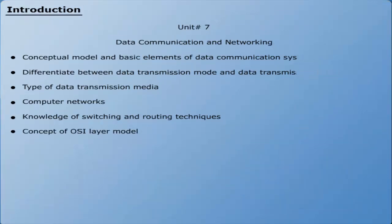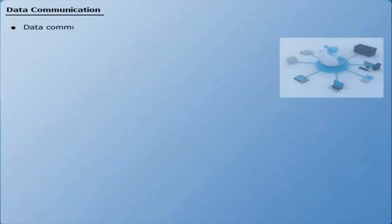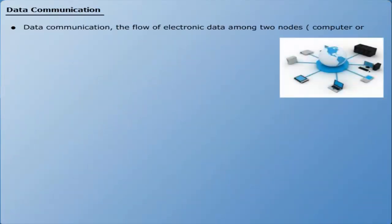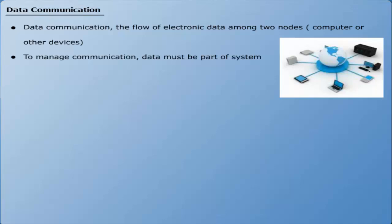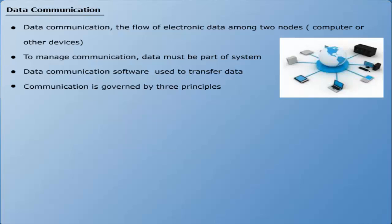Data communication is the flow of electronic data among two nodes, computers and other devices, through communication media. To manage the communication, the nodes must be part of a communication system and linked with each other. The data communication software is used to transfer data from one node to another. The communication system is governed by three fundamental principles: deliver, accuracy, and timeliness.